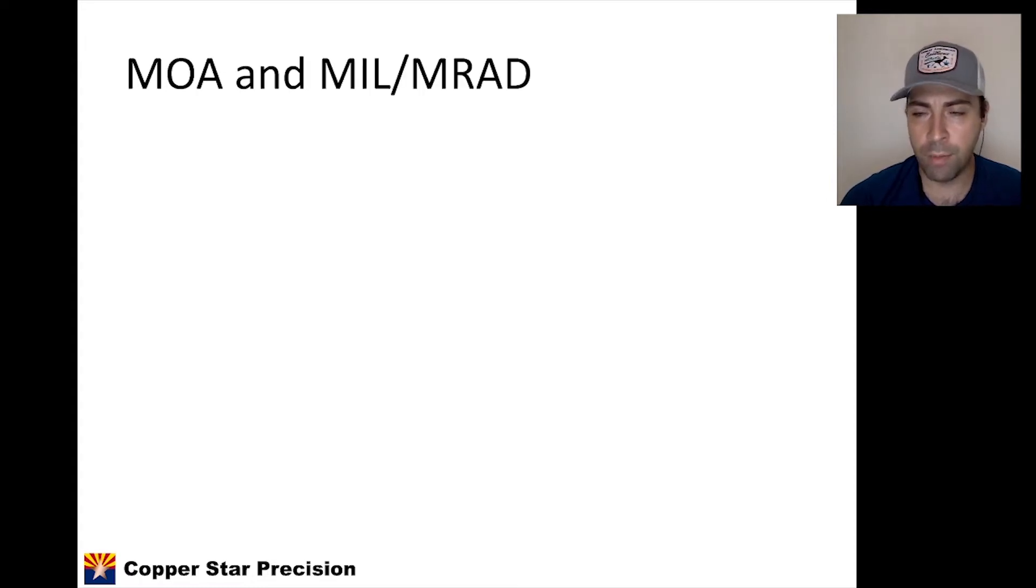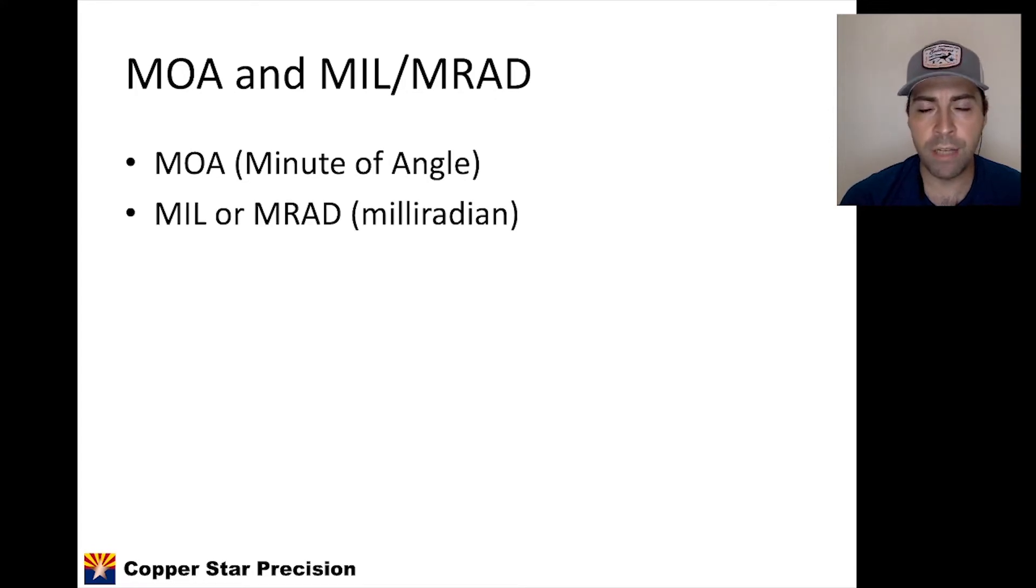MOA and MILS or MRAD - I'll switch between the two because they're interchangeable, but let's define them. MOA stands for minute of angle. MIL or MRAD stands for milliradian. All you need to know is that both are angular measurements. They're ways of measuring angles.